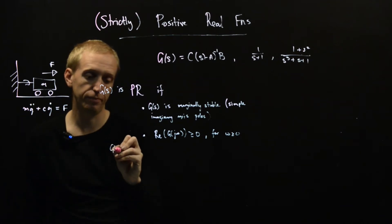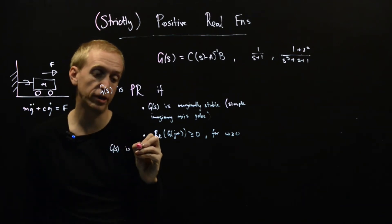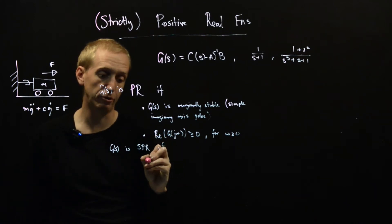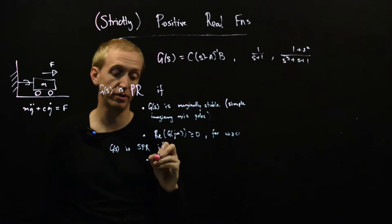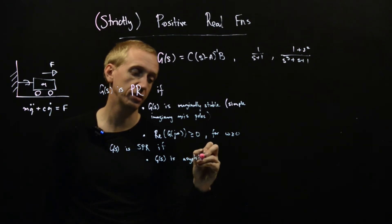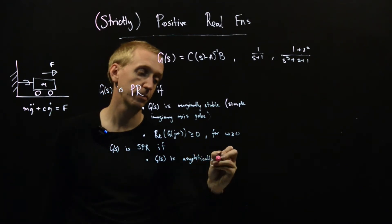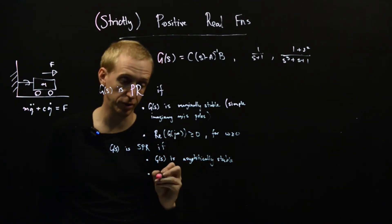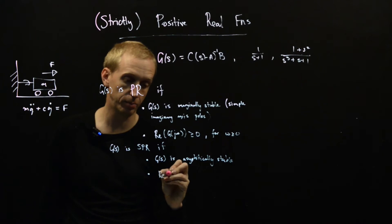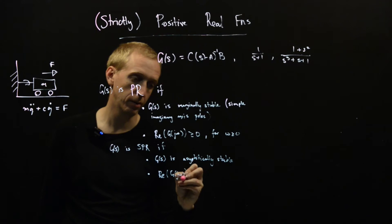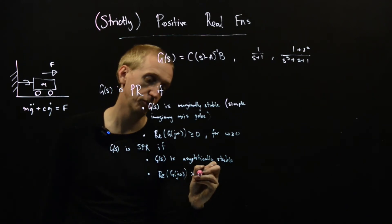And g of s is said to be strictly positive real if a very similar criteria hold, and the first is that g of s is asymptotically stable, and now we have the strict version of this, and also that the real part of g of j omega is greater than zero.